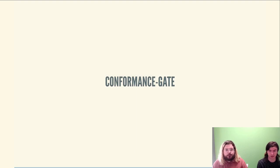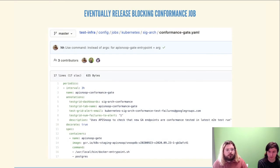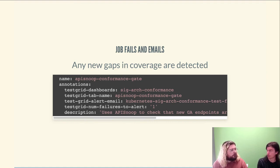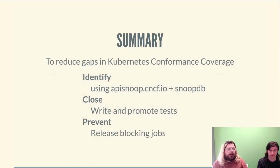The next is the conformance gate, which uses API Snoop under the hood. It alerts when endpoints are promoted to GA without conformance tests, as described in the YAML shown here. It's intended to be a release blocking job — the job manifest has email for alerts, and when alerted, we can tell SIG Release of an untested endpoint that will need a test or will not be included in the next release. In summary, to improve Kubernetes coverage: identify gaps using API Snoop and SnoopDB, close those gaps through writing and promotion of tests, and prevent new ones with release blocking jobs.